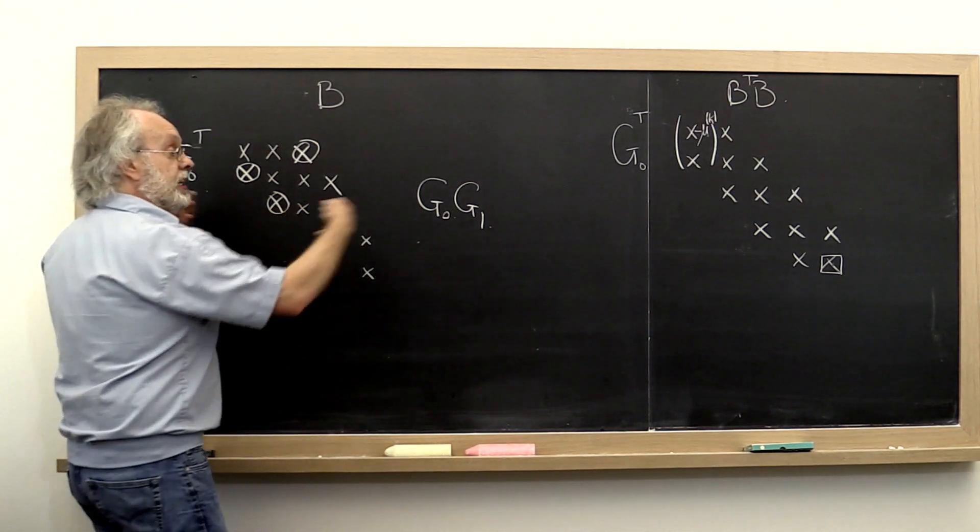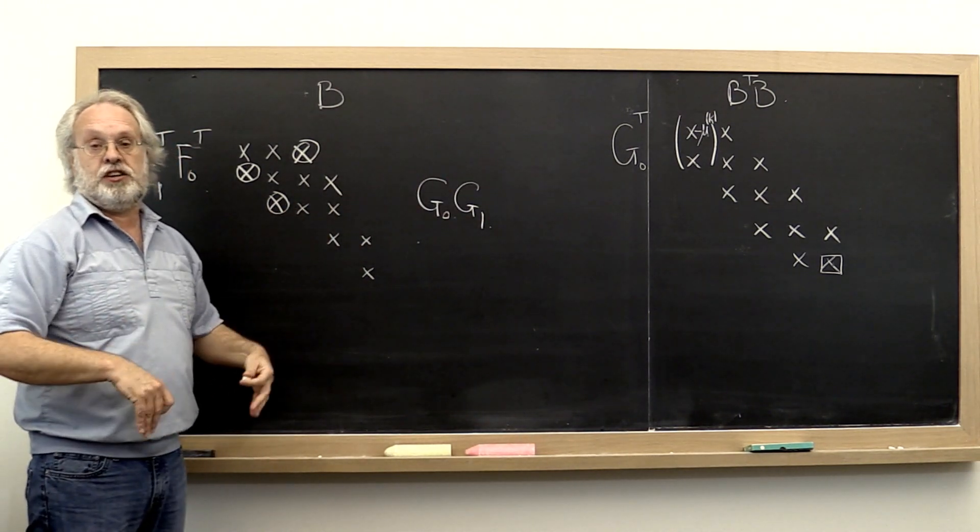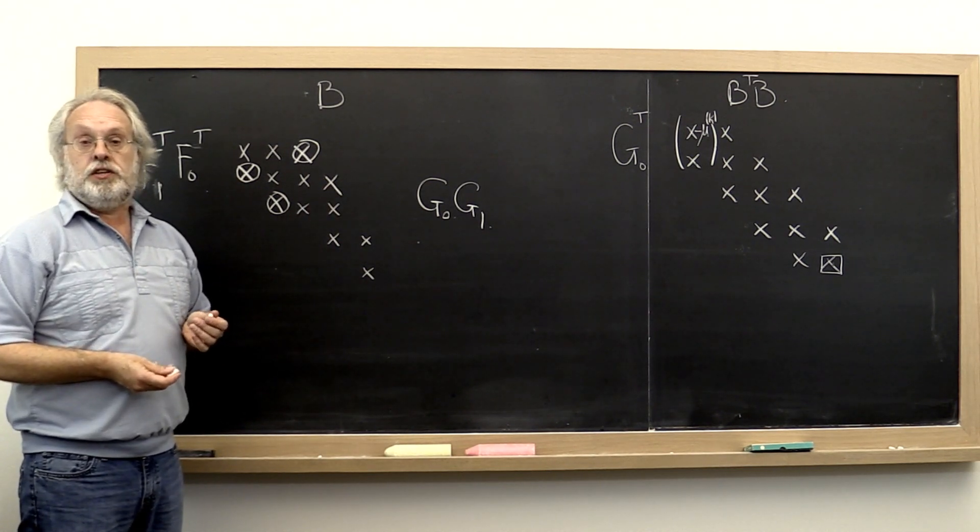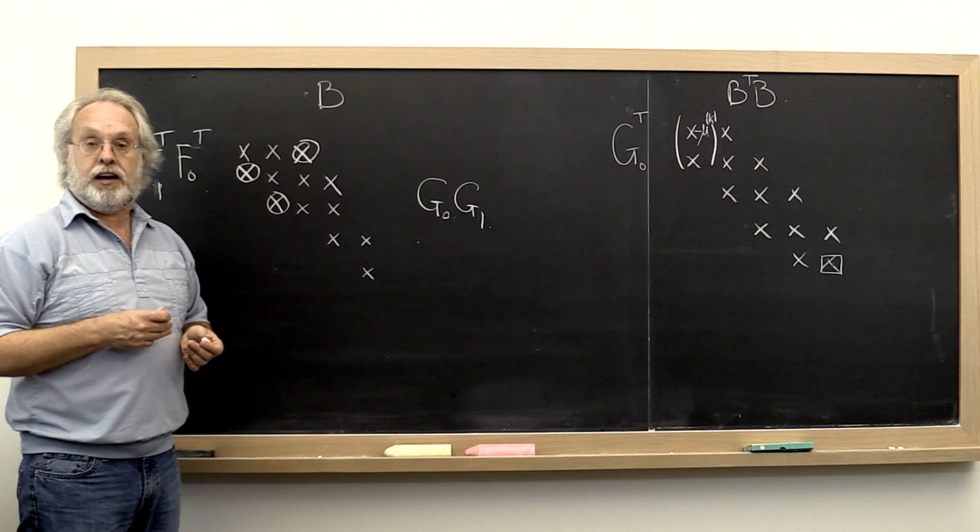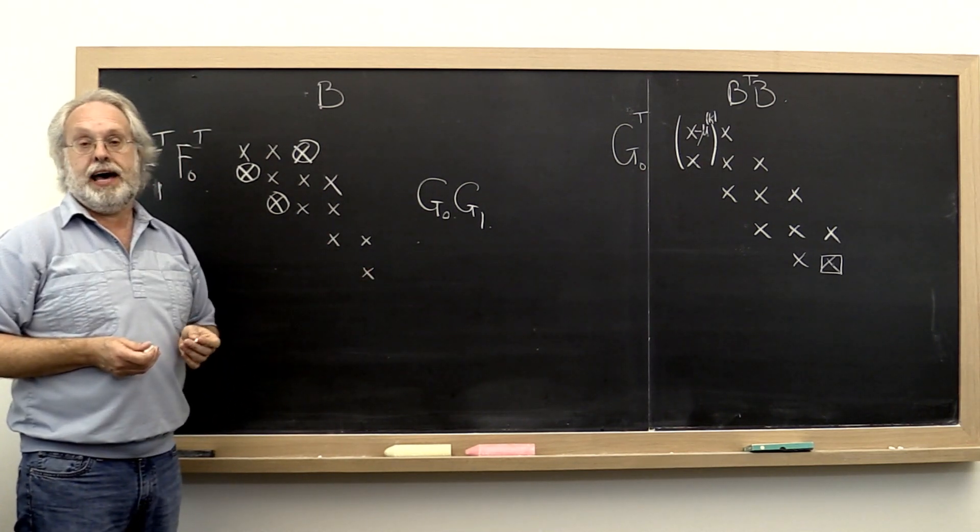And if we then accumulate all of these different Givens rotations and accumulate them into the various unitary matrices and orthonormal matrices that we encountered in getting to the point where this matrix was bidiagonal,